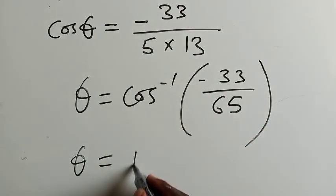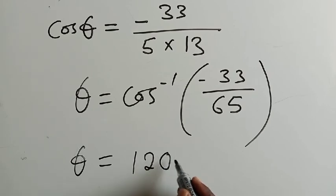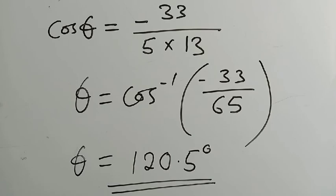So what is the cos inverse of this stuff? We'll just punch on your calculator. It will be 120.5 degrees. So this is the angle. That's how we calculate the angle between the vectors. Thank you so much for watching. Don't forget to subscribe and like my video.